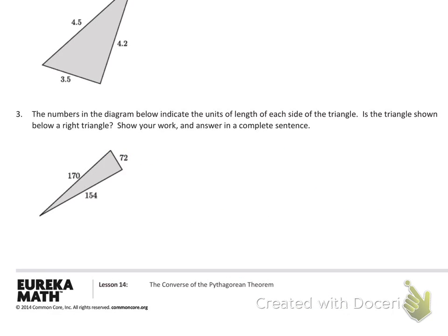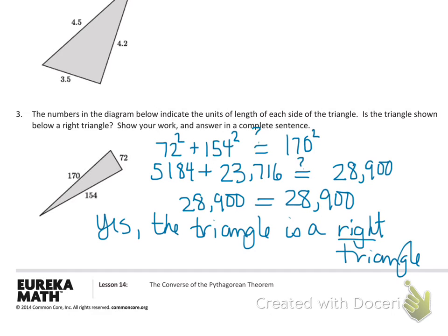Try exercise three on your own, just like we did the first two, to determine if the triangle shown is a right triangle. Pause the video and come back to check your work. Here's a sample of what you should have written: check if 72 squared plus 154 squared equals 170 squared. Using a calculator, I get that the sum of the squares of the legs is 28,900, and 170 squared is also 28,900. Since they are equal, yes, the triangle is a right triangle.